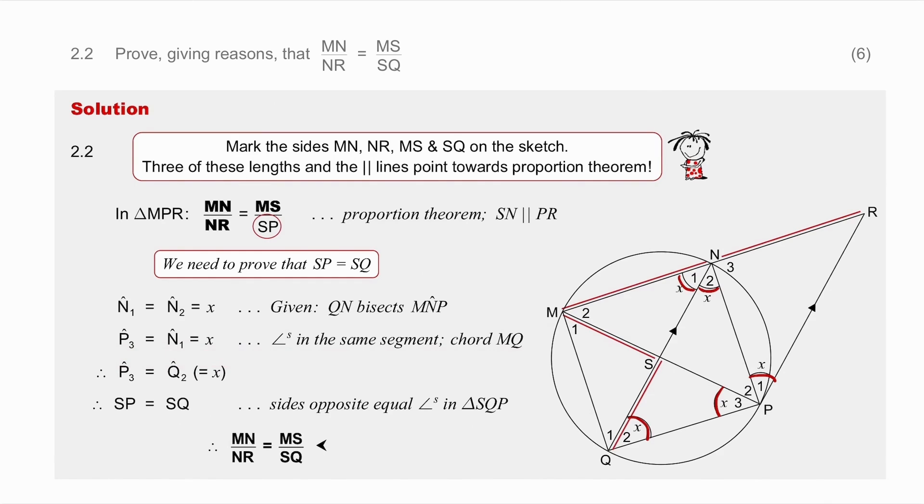And you will now notice that you have angle P3 and angle Q2 both equal to x. And it is critically important that you say which are the angles you're going to be working with. You've got a number of x's on this diagram. Which are the angles that are going to give you the equal sides? It's angle P3 and angle Q2. So you must write down those are the two angles.